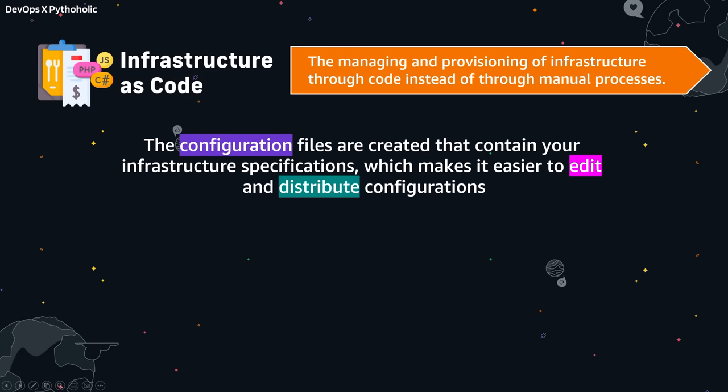When you think of IaC or infrastructure as code, you need to remember this very important thing. When you want to provision resources like compute, storage, or network, or even deploy your application without manual intervention, you need infrastructure as code. IaC is the process of managing and provisioning infrastructure through code instead of doing it through manual processes.